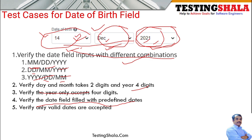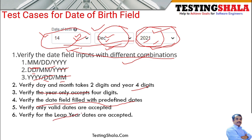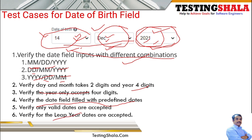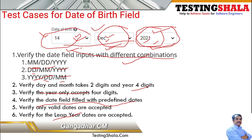You should ensure that whenever we enter dates, you consider only valid dates. In certain months you may not have a 31st date, or in February you may not have a 29th or 30th date. But also test for leap year dates — leap years come once every four years, and during that time February will have a 29th date.